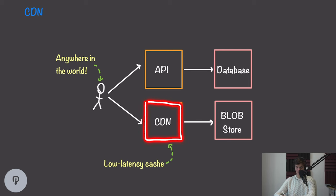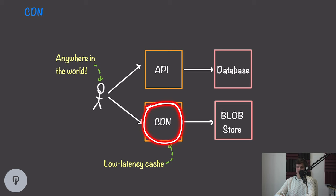This CDN is going to cache the data in our blob store and be distributed across the globe. We'll have multiple points of presence across the globe where the CDN can be deployed, allowing users to access data from a geographic location very close to them. This will significantly reduce latency and significantly reduce load on our blob store. At this point, we have a working system for storing metadata and binaries, with a good way for users to access them quickly.